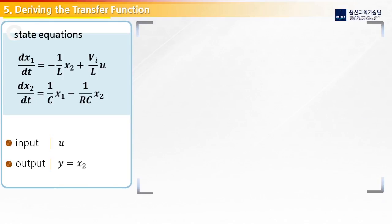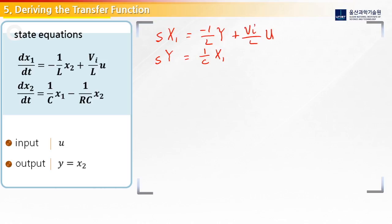We have our state equations on the left, and first we need to take the Laplace transform of both of these. We also need to change x2 into y. So the first equation would be s·x1 equals 1 over L, and instead of x2 we replace it with y, that's our output, and then Vin over L times u, that's our input. For the second equation, changing x2 into y, we get s·y equals 1 over C times x1, minus 1 over RC times y. In our final equation, what we want is y(s) over u(s), so we need to get rid of the x1 term.